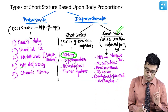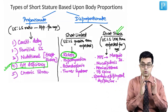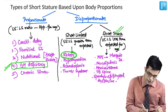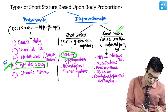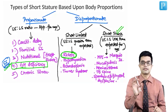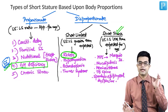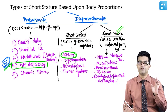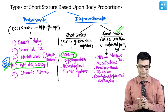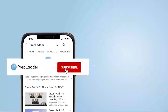Growth hormone deficiency usually causes proportionate short stature. This is a NEET super-speciality MCQ that has already been asked in previous years — please note it as one of your one-liners. This completes the second classification of types of short stature.